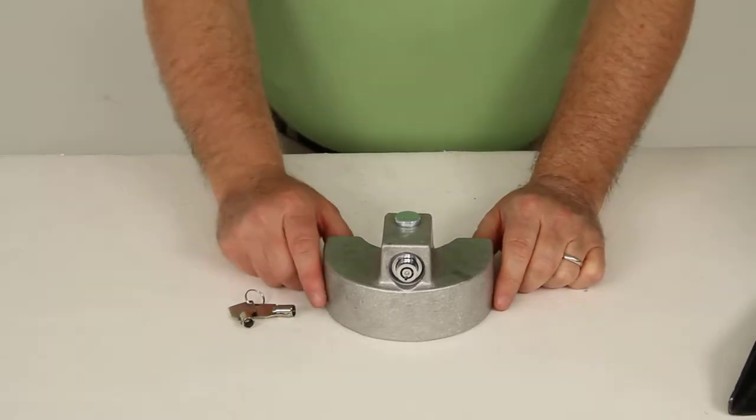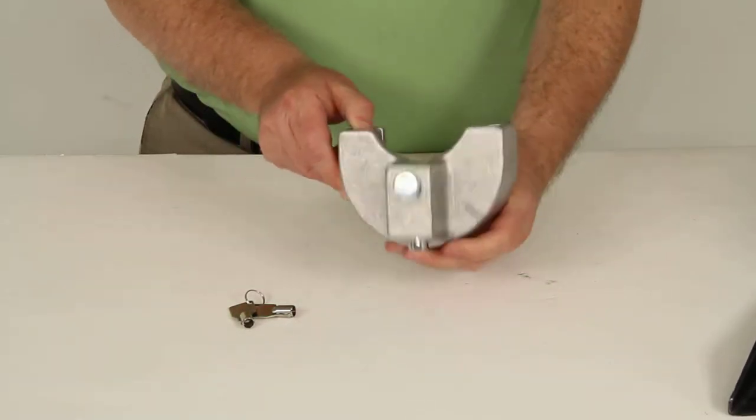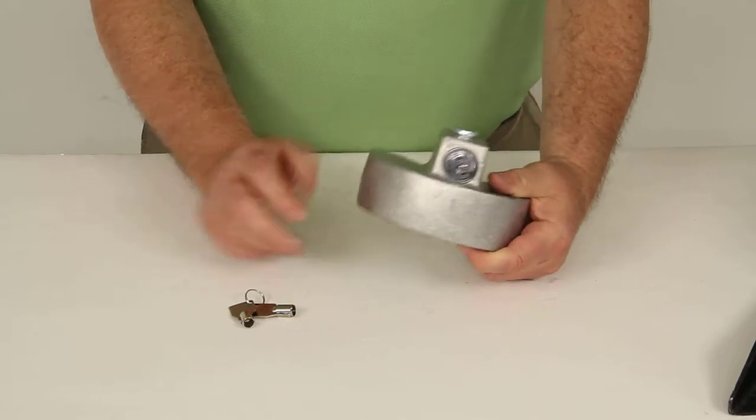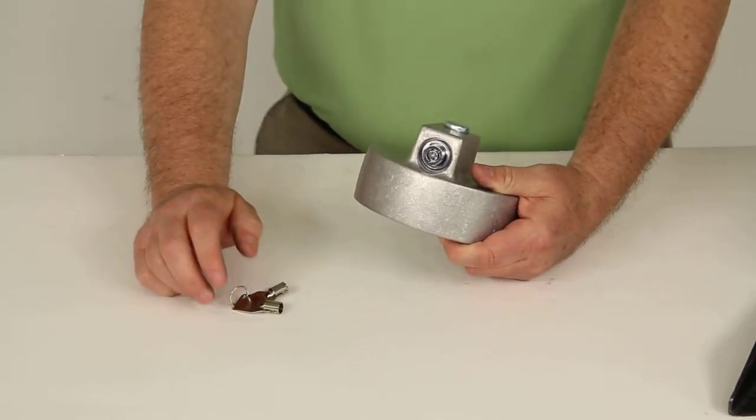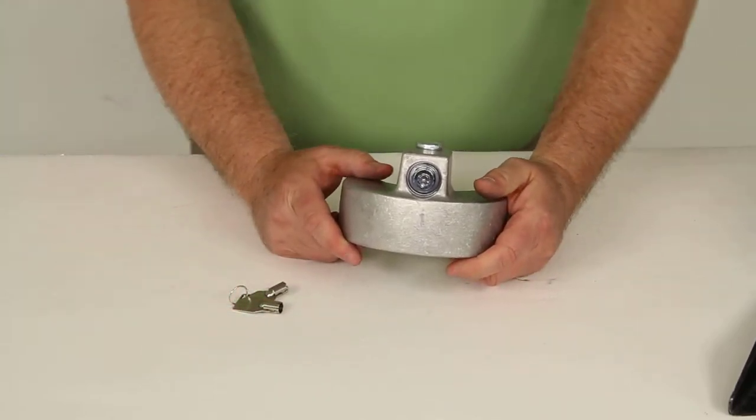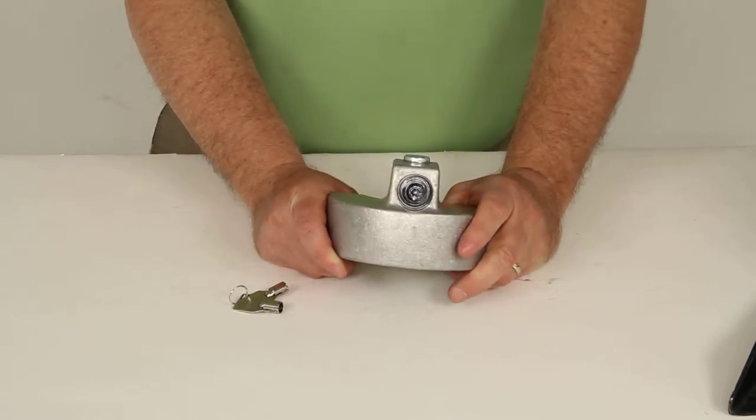Today we're going to review part number BLTL-34. This is the Blaylock Easy Lock Trailer Coupler Lock for 2 and 5/16ths ball couplers that have a flat or a rolled lip.